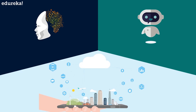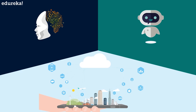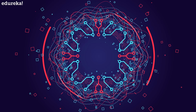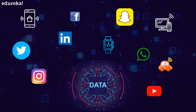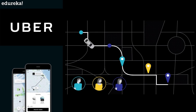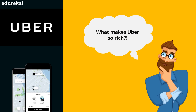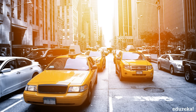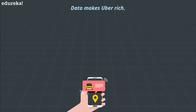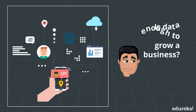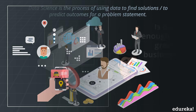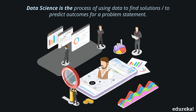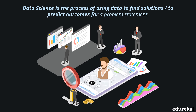We hear a lot about how artificial intelligence and machine learning are going to change the world, and how the Internet of Things will make everyone's life easier. But what's the one thing that underpins all of these revolutionary technologies? The answer is data. From social media to IoT devices, we're generating immeasurable amounts of data. But is data enough to grow a business? Of course it isn't — you must know how to use the data to draw useful insights and solve problems. This is where data science comes in. In simple words, data science is the process of using data to find solutions or to predict outcomes for a problem statement.